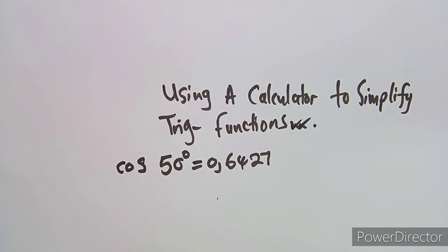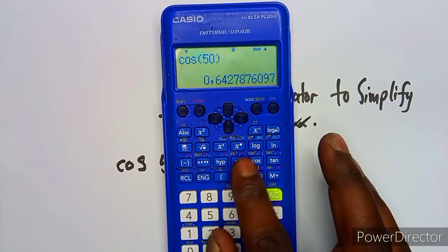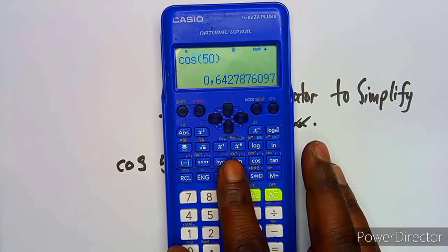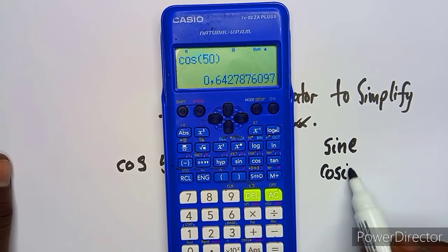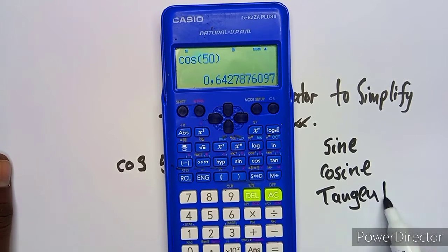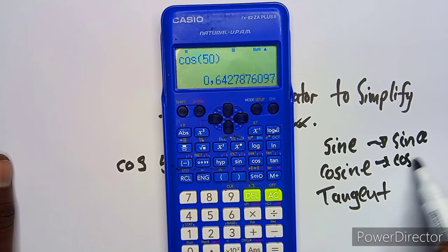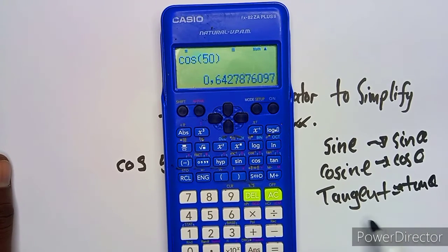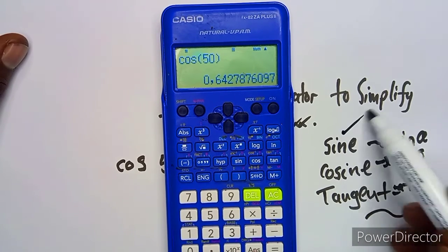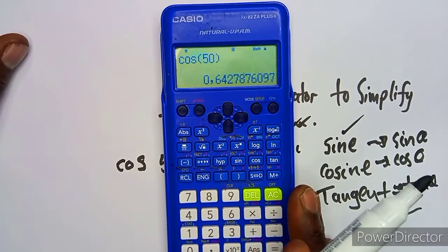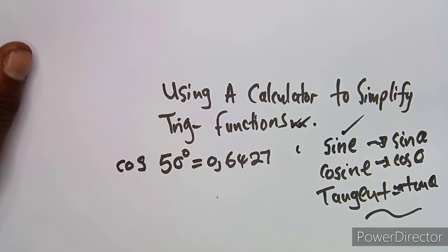The same approach applies to sine and tangent. On the calculator you'll see 'sin', 'cos', and 'tan' — these are shortcut notations for sine, cosine, and tangent. So cos 15 is direct, tan 50 is direct, and sine is also direct. These are straightforward to evaluate.